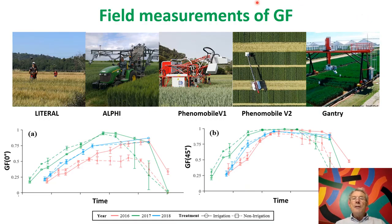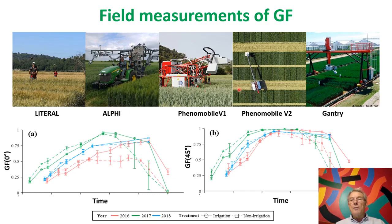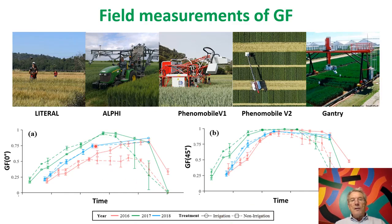The green fraction can be measured with several sensors and systems — handheld systems like LAI-TAL, sensors on a tractor, fully automatic robots like Phenomobile, or gantry systems. Examples of green fraction evolution during the growth period are shown for wheat during different years, for two modalities — irrigated and non-irrigated — showing quite nice dynamics of those green fractions.